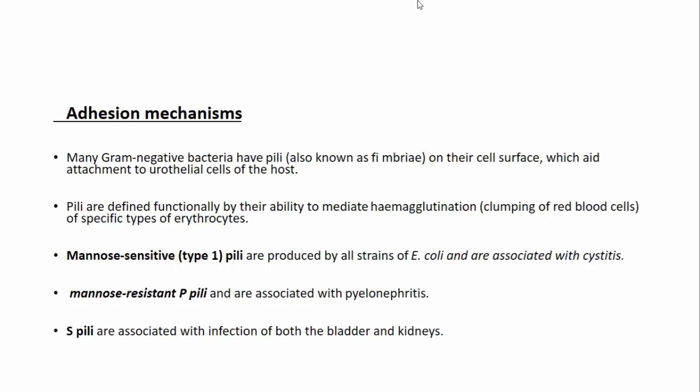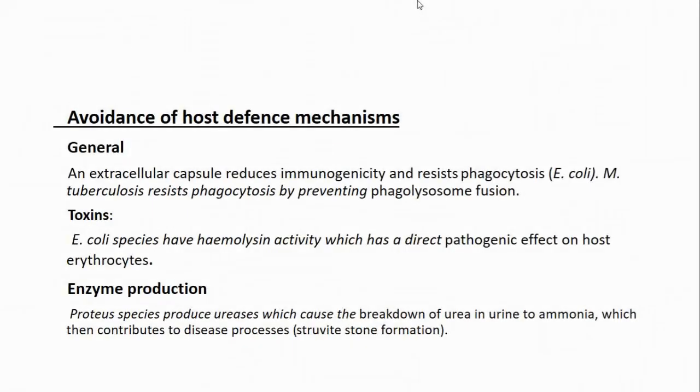Pili are classified based on hemagglutination. Type 1 pili are usually mannose-sensitive and are present in E. coli associated with cystitis, while P pili are associated with pyelonephritis. P pili-associated infections usually affect both the bladder and kidneys.